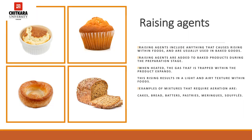The main key points of Raising Agents are: Raising Agents include anything that causes rising within foods and are usually used in baked goods. They are added to the baked product during the preparation stage. They create gas, air, or steam which expands when heated and causes the food to rise. When heated, the gas trapped within the product expands, because heating causes the molecules in the air to move more rapidly and apply more force. This rising results in a light, airy texture within the foods.